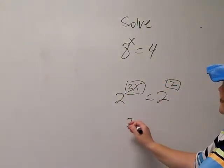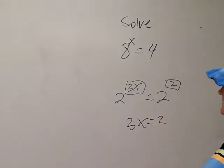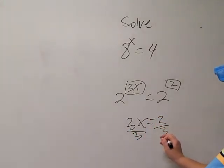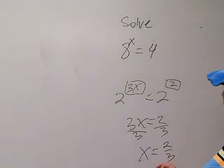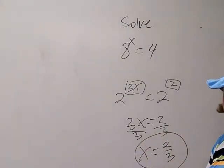So I set that up as 3x is equal to 2. Just solve for x. It's being multiplied by 3, just divide by 3. So x is 2 thirds. So x is 2 thirds.